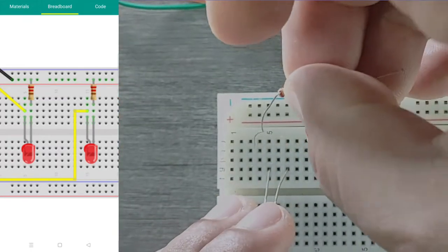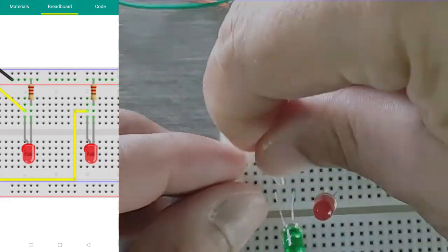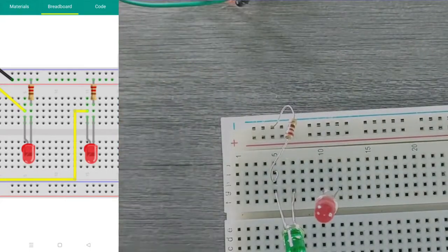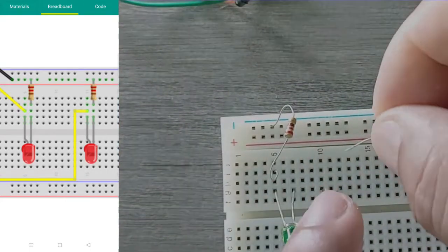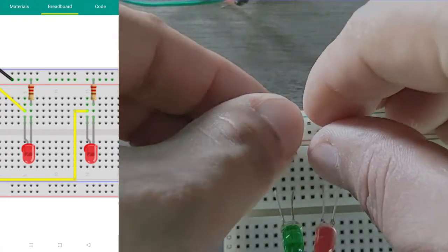Next, we place a resistor on the negative side of the LED before it connects to the Arduino board. Well, you can actually place it either on the positive or the negative side. Either way, it will still work.